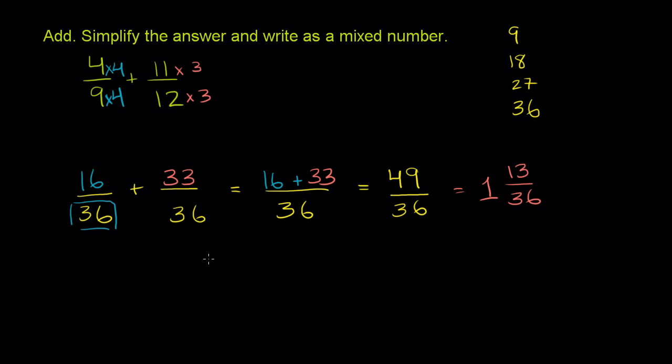And you could do that manually if you like. You'd take 36 into 49. 36 goes into 49 one time. 1 times 36 is 36. And then you subtract. 9 minus 6 is 3. 4 minus 3 is 1. You have a remainder of 13. So that's our answer: 1 and 13/36.